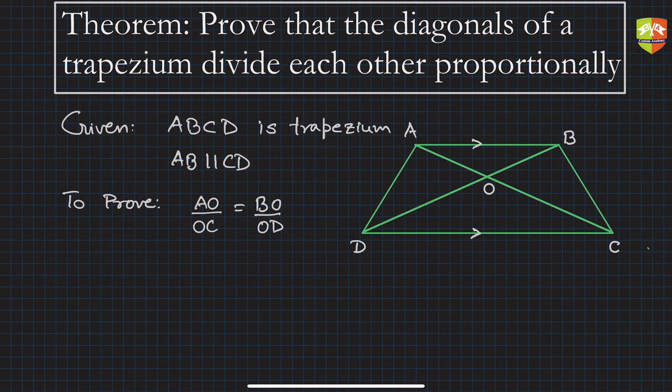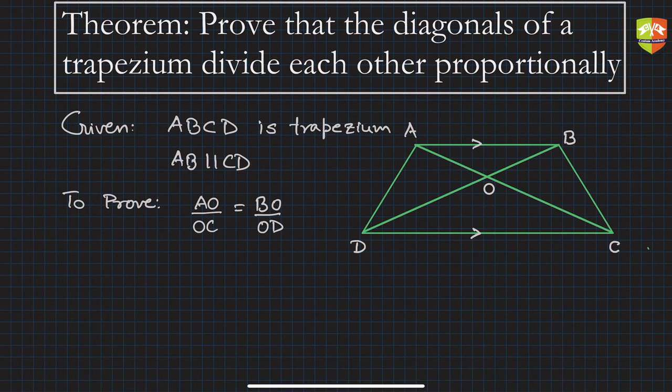You can see there are triangles and ratios of sides, so we are getting a hint of using the Basic Proportionality Theorem. For BPT I need a triangle where one side is parallel to another side which divides the other two sides. So I need to do some construction.